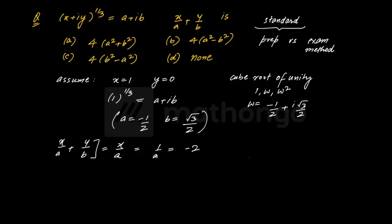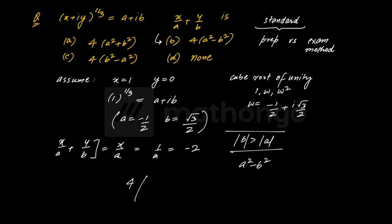Khatam yaar, simple question. Aur yeh bhi baat samajh mein aa rahi hai ki jo b hai, modulus b is greater than modulus a. Toh agar tumhe negative answer chahiye, tumhe kuch kaisa chahiye hoga - a square minus b square. Plus karne pe toh nahi aane wala, obvious hi baat hai. Toh seedha seedha, mein sabse pehle answer option B pe attack marunga. Answer option B kya tha - four times a square minus b square. a square kitna ho gaya 1 by 4, b square kitna ho gaya - root 3 tha, root 3 ka square 3, aur yeh ho gaya 4. 4 aur 4 cancel - seedha seedha minus aa gaya. Khatam. Answer option B hai.